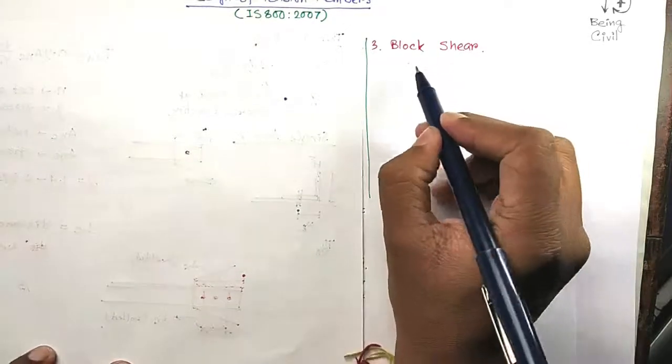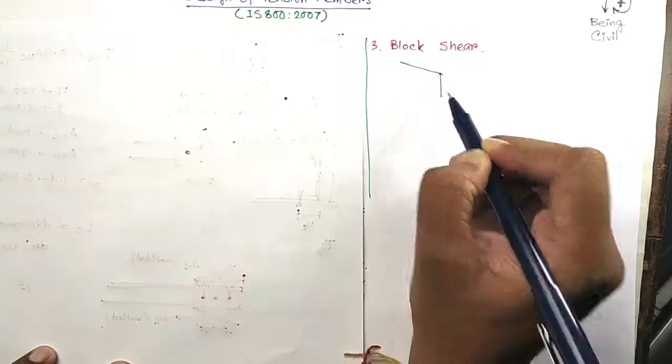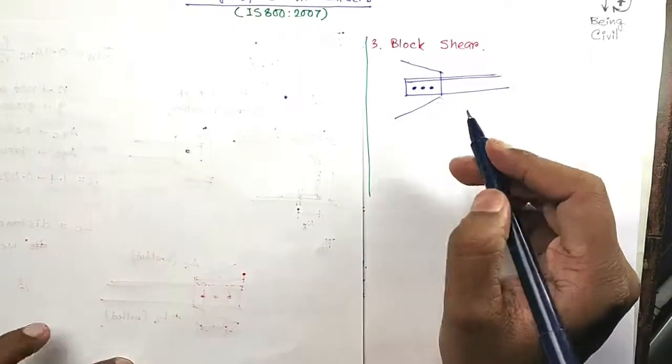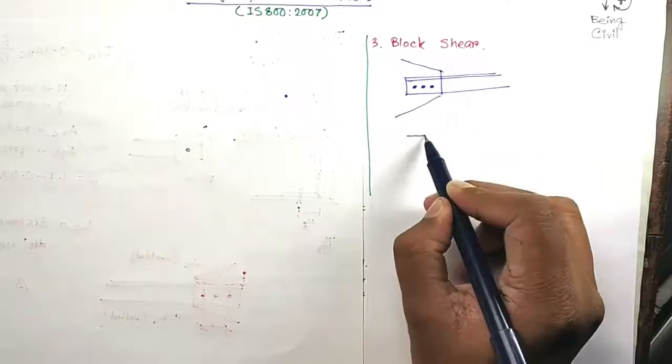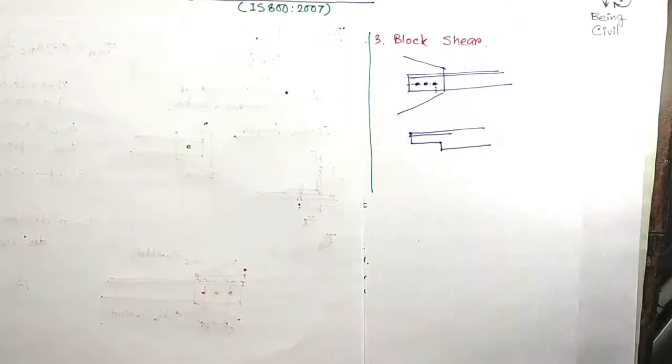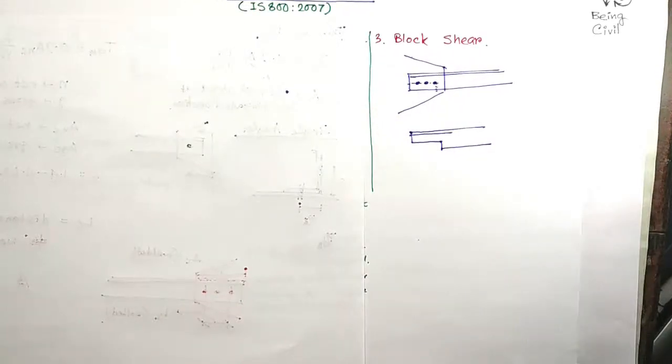Now one thing is remaining: design strength due to block shear. Block shear means that suppose the angle is connected like this. Due to the block shear failure, the angle may fail like this. That is, it may be the failure plane. So how to calculate the block shear strength?